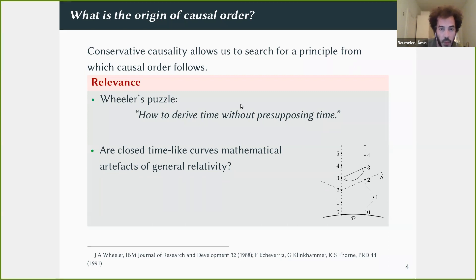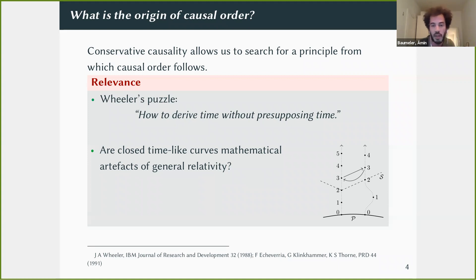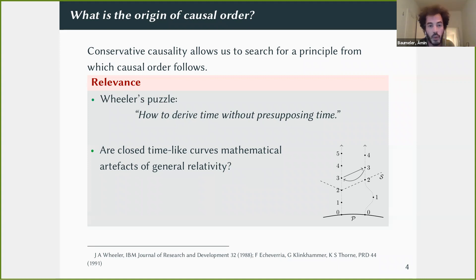From general relativity's perspective, closed timelike curves are worldlines of particles in a spacetime geometry such that the particle bumps into itself. This is consistent with general relativity, but we think these solutions are mathematical artifacts. One way to make this precise is to find a reasonable principle from which causality is retrieved, allowing us to rule out such closed timelike curves — that is one motivation for developing these theories.